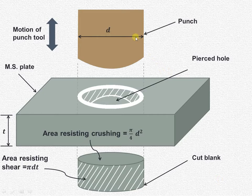As you can see, this is the punch having diameter d. This is the mild steel plate, MS plate. This shows the direction of the reciprocating motion of the punch tool and this motion is obtained by the punching press itself.